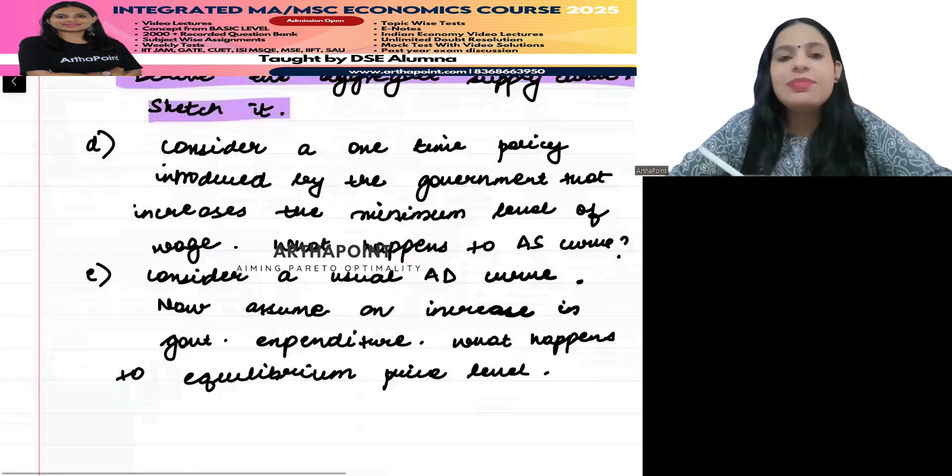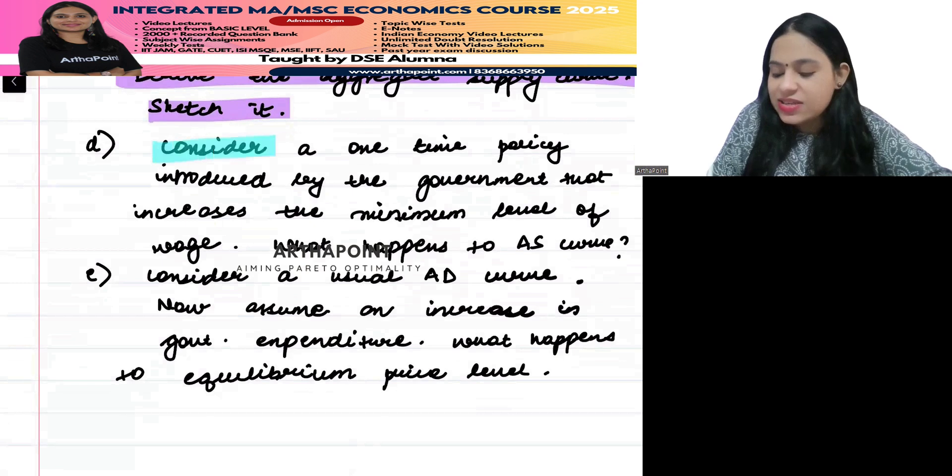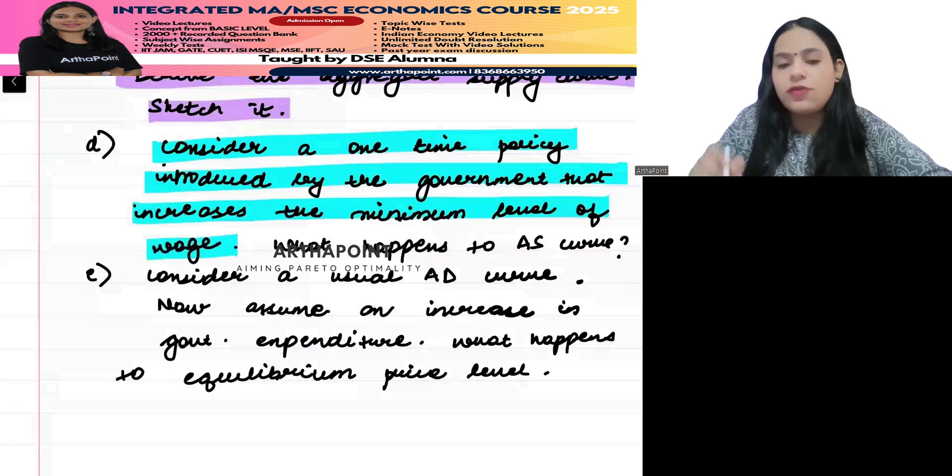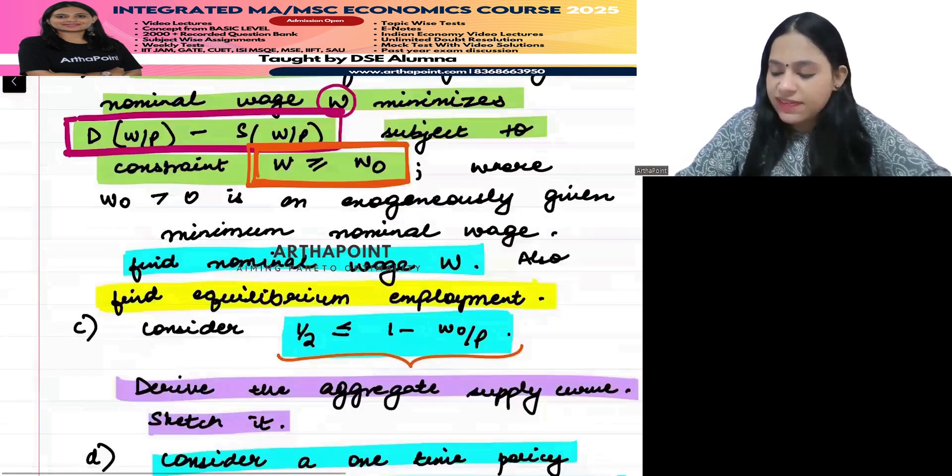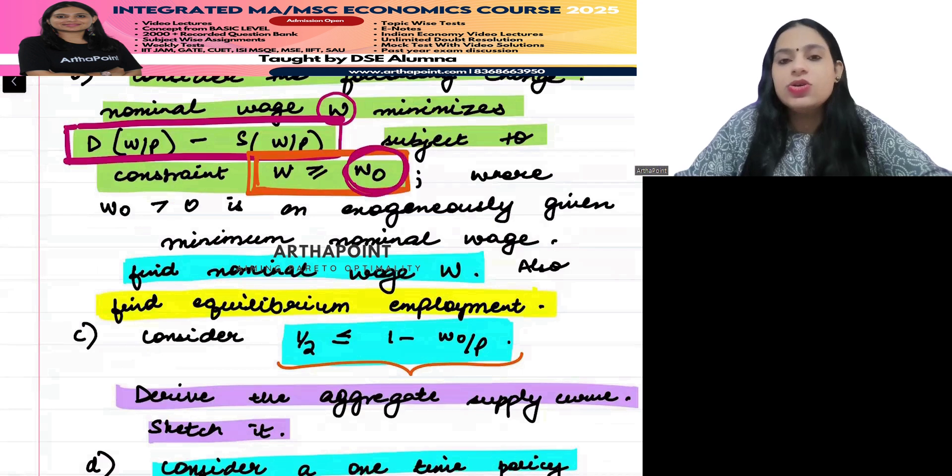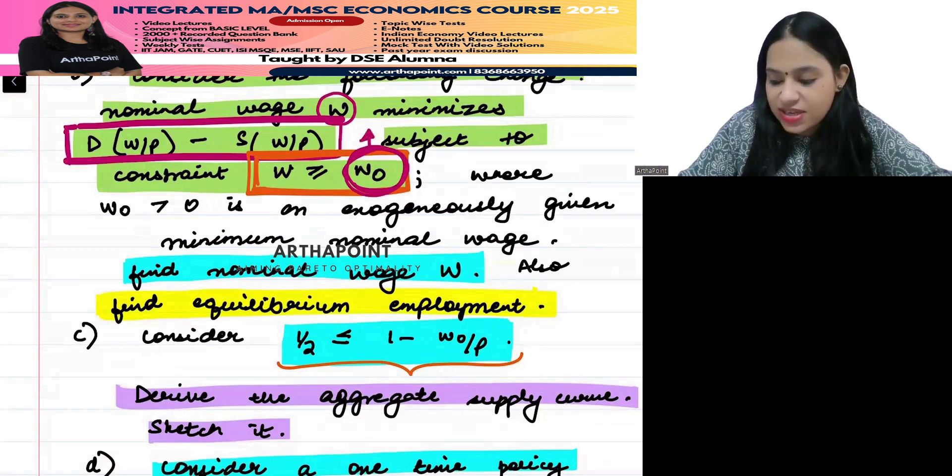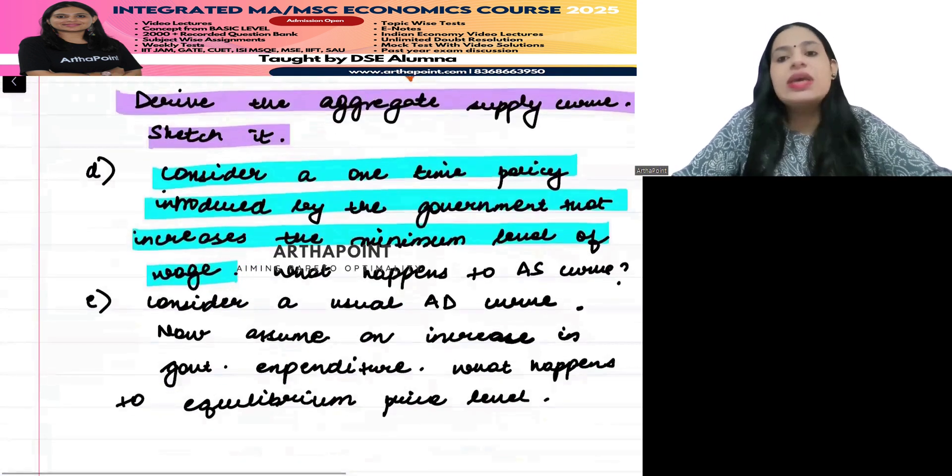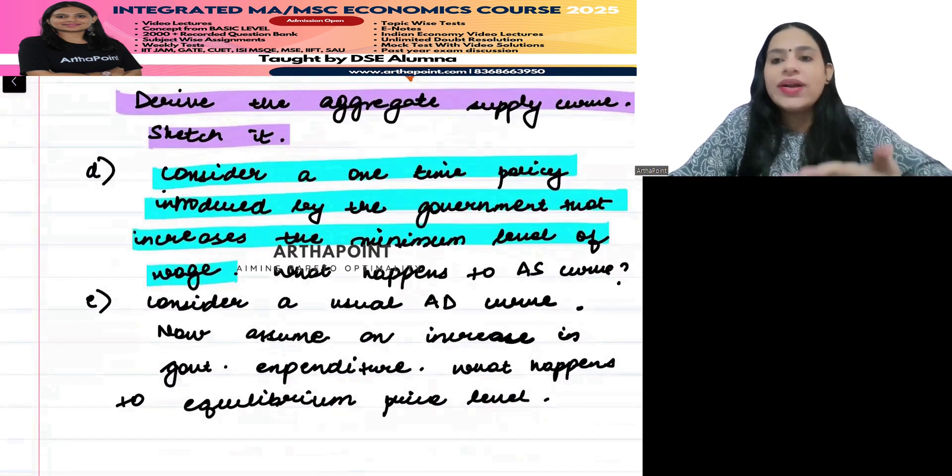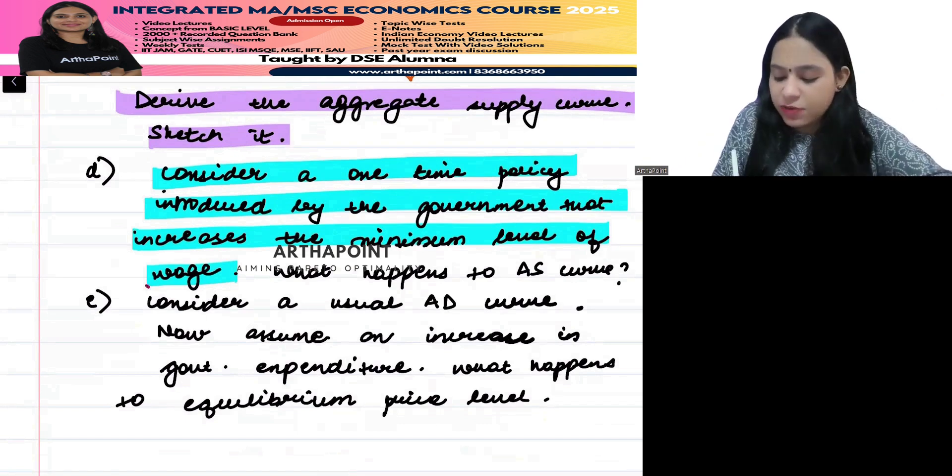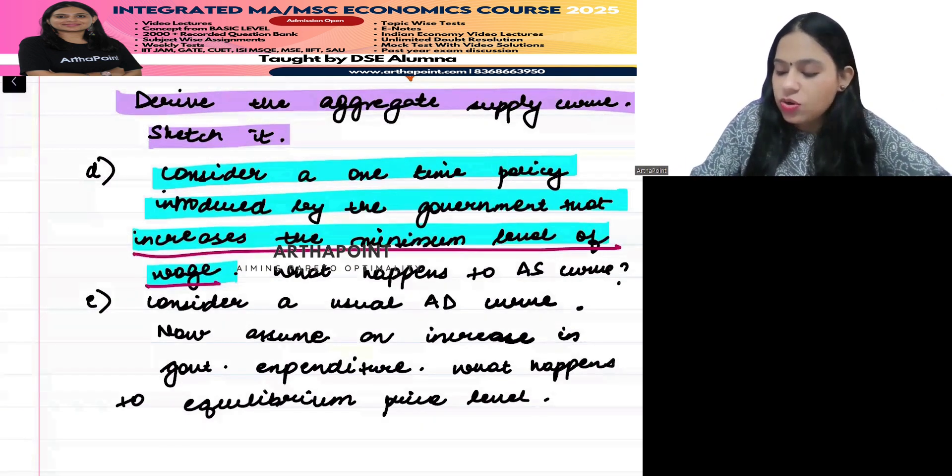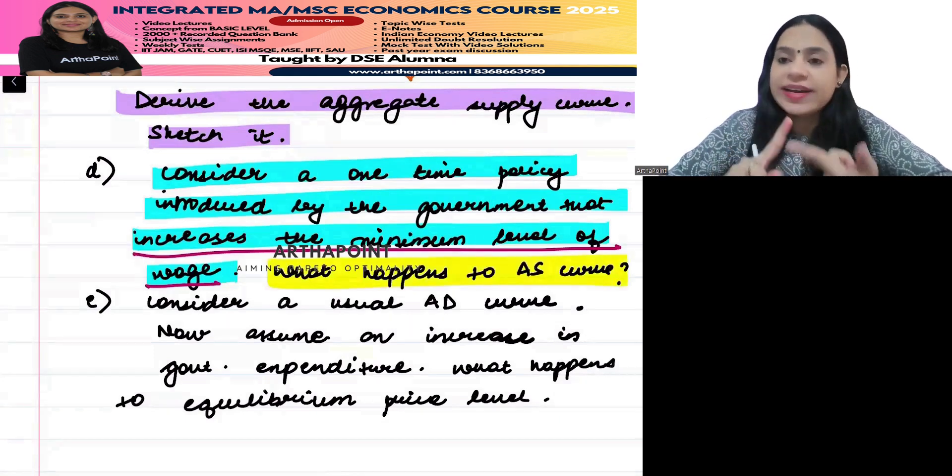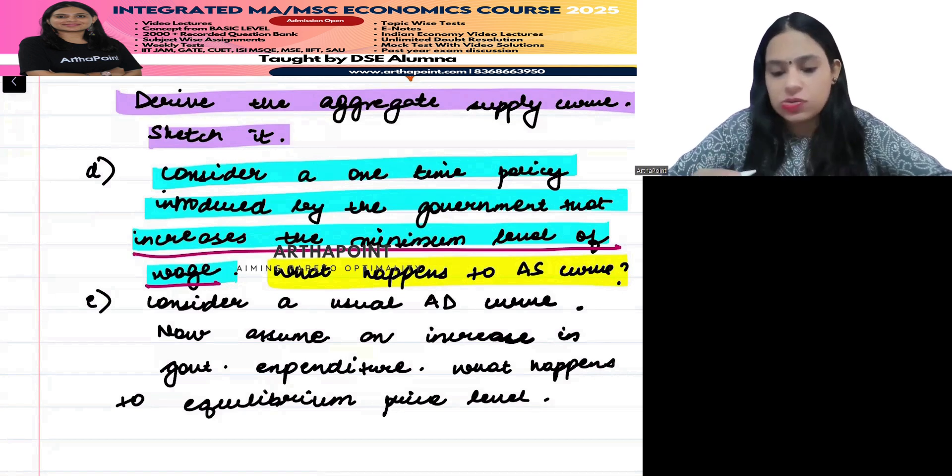Part B: Consider a one-time policy introduced by the government that increases the minimum level of wage. This W naught - imagine that this has increased. Consider that there is a one-time policy that's increasing the minimum level of wage. Now you need to tell what will happen to the AS curve, how the AS curve will change graphically.